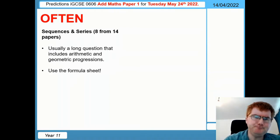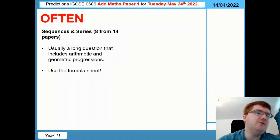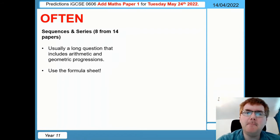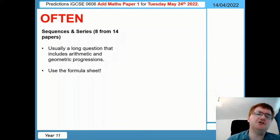Sequences and series, eight from 14, is one of those irritating questions that when it appears, it usually comes in a long format with a little bit of arithmetic and then a little bit of geometric as well. Make sure you know on the formula sheets the formulae are available to you for working out the sum of an arithmetic series or a geometric series. Notice they use the word progression on this exam, so when I'm saying series, on the exam they generally use the word progression instead.